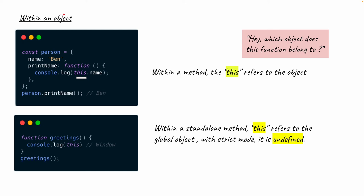In another scenario with a plain standalone function — not inside an object — if we console this and invoke the function, this refers to the window object. Within a standalone function, this refers to the global object. Another caveat: if strict mode is enforced, this refers to undefined.